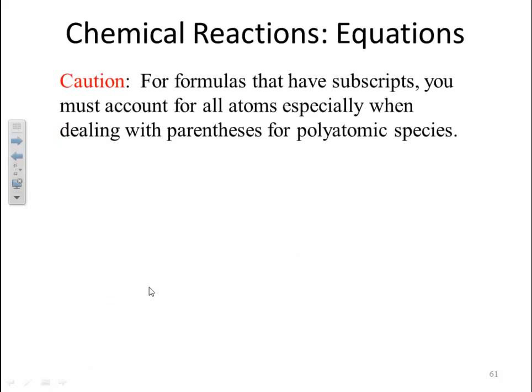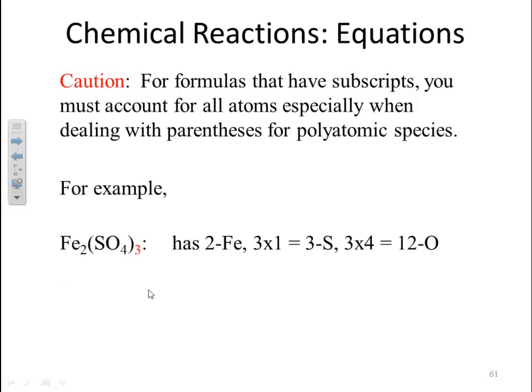Caution. For formulas that have subscripts, you must account for all atoms, especially when dealing with parentheses for polyatomic species. For example, iron 3 sulfate. This has two irons and then you have SO4, but you have three of them. You have three SO4s. That means I have three sulfurs and I have three times four, twelve oxygens to account for. You have to account for all the atoms and the subscripts within the species.